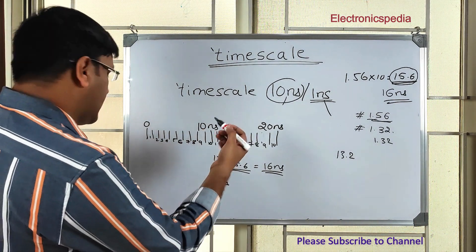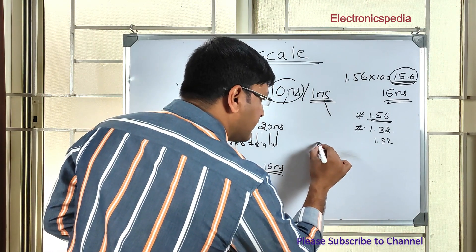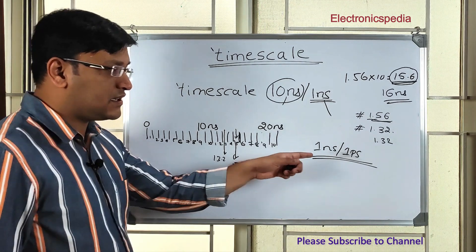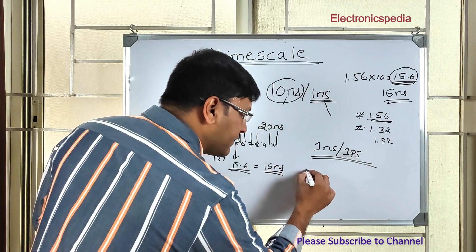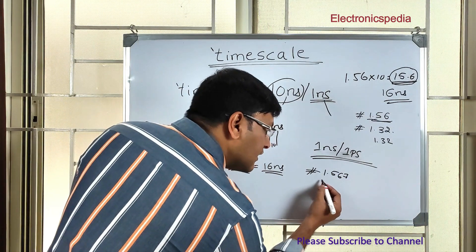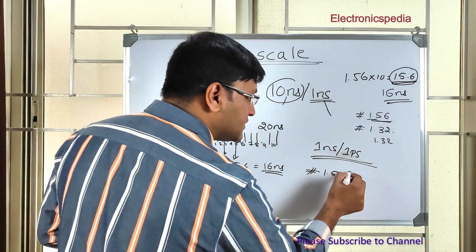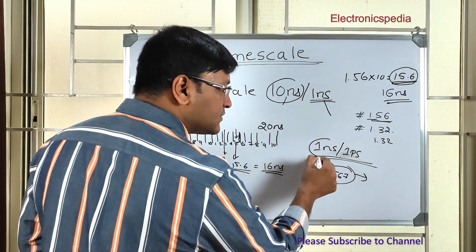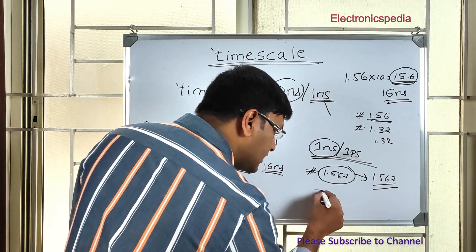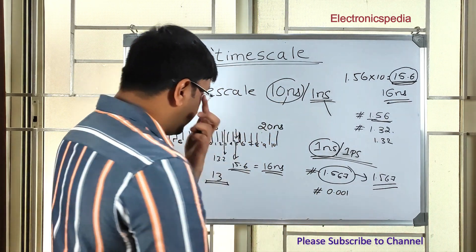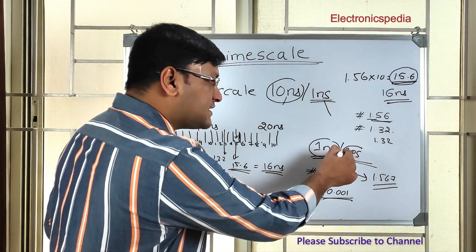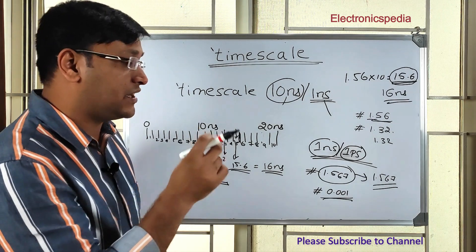Another commonly used timescale is 1 nanosecond by 1 picosecond. If someone specifies a hash delay of 1.567, the time unit is 1 nanosecond, so the value stays the same numerically. But the precision is 1 picosecond, meaning you can specify delays down to 0.001 nanoseconds. This tells us the minimum delay resolution available when using the 1ns/1ps timescale.